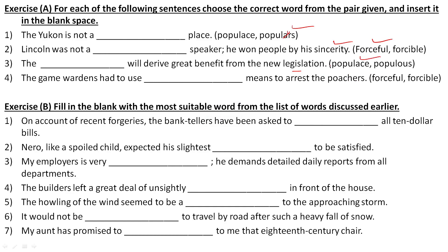The game wardens had to use dash means to arrest the poachers. What type of means did the game wardens have to use to arrest the poachers? The answer here is 'forcible.'